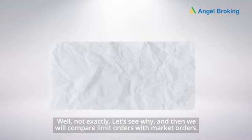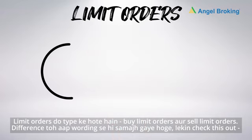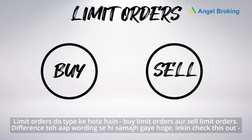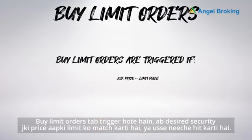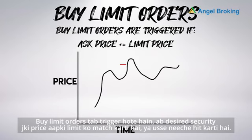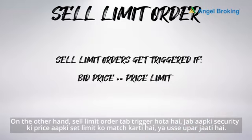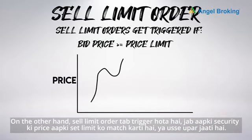Limit orders are of two types: buy limit orders and sell limit orders. The difference you can understand from the wording itself. Buy limit orders are triggered when the desired security's price matches your limit or hits below it. On the other hand, a sell limit order is triggered when your security's price matches your set limit or goes above it.